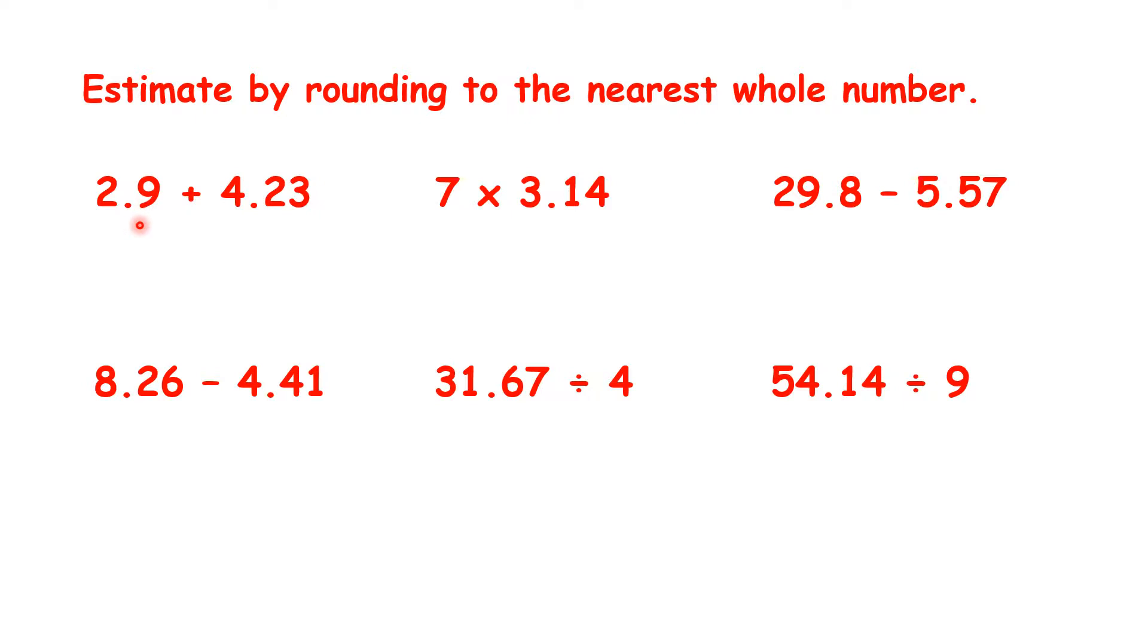So let's look at 2.9 plus 4.23. When rounding to the nearest whole number, we need to look at our tenths. Here, because the tenths digit is a 9, because it's 5 or more, we round up to 3.